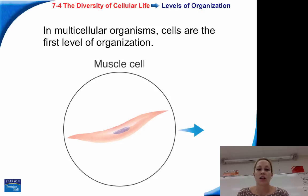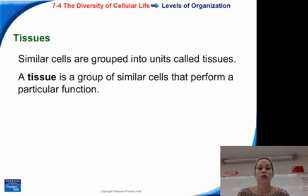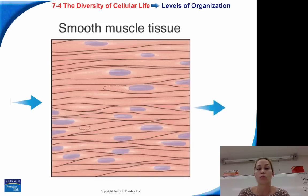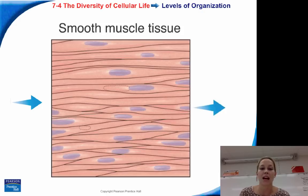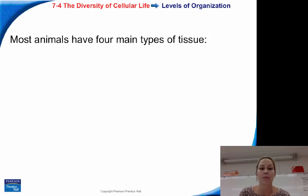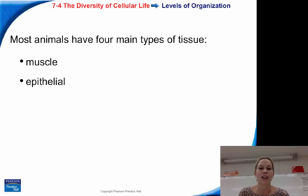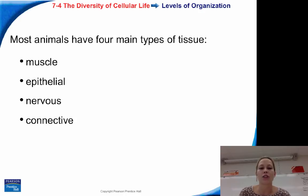Similar cells are grouped into units called tissues. A tissue is a group of similar cells that perform a particular function. Smooth muscle tissue is a group of similar cells designed for peristalsis, or mechanical breakdown of food in the stomach. Most animals have four main types of tissue: muscle tissue, epithelial tissue (such as skin and eyes), nervous tissue, and connective tissue such as ligaments that connect your joints together.